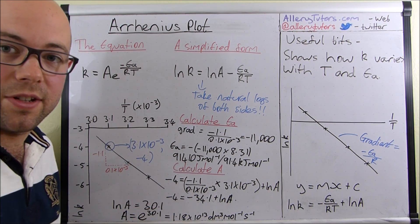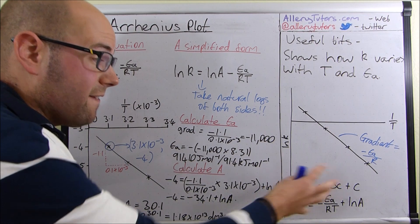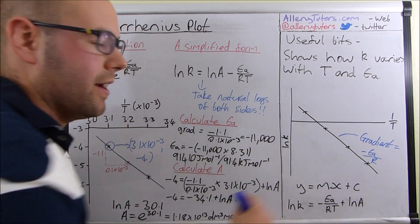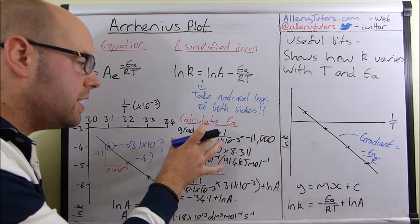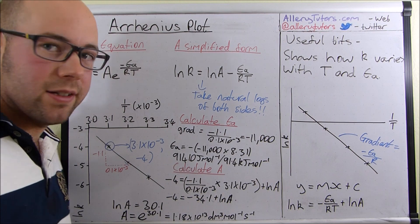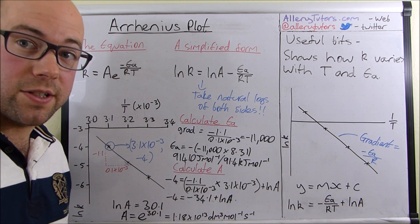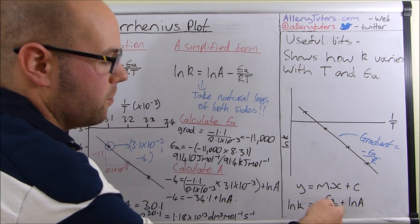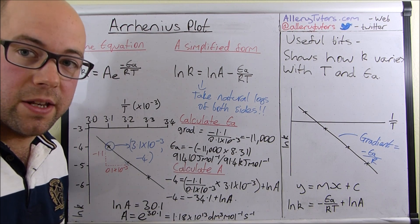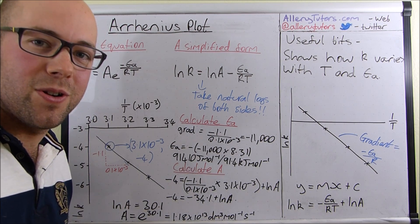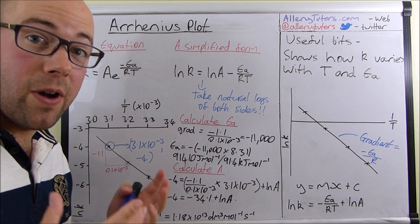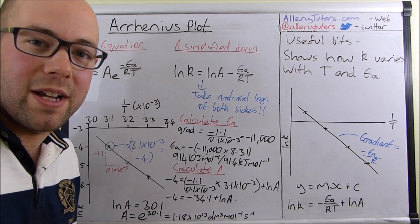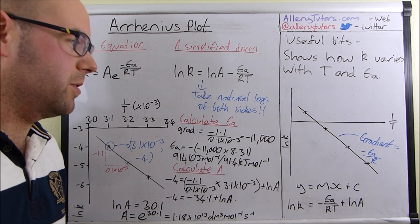And there we have it — that's the answer for A. Make sure you know the different parts: you need to know how to work out the gradient because that tells you the activation energy, and if they ask you to work out the Arrhenius constant A, you use the gradient you've already worked out and chuck it into the equation to find A. If you've got any questions, leave them in the comments box below and I'll try to get round to answering them as soon as possible. Bye bye.